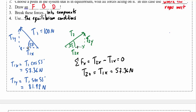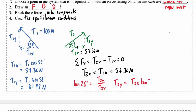Knowing that T2x is 57.36 Newtons and the angle is 25 degrees, I can solve for T2y. Tan of 25 degrees equals T2y over T2x, so T2y equals T2x times tan of 25 degrees, which ends up being 26.75 Newtons.